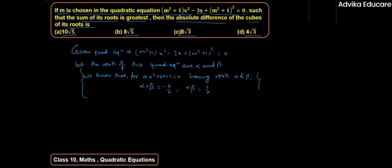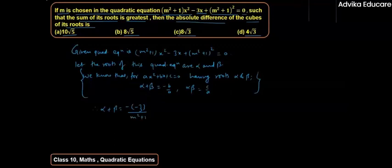Applying this to our quadratic equation, therefore alpha + beta = -b/a = -(-3)/(m² + 1) = 3/(m² + 1). So alpha + beta = 3/(m² + 1).